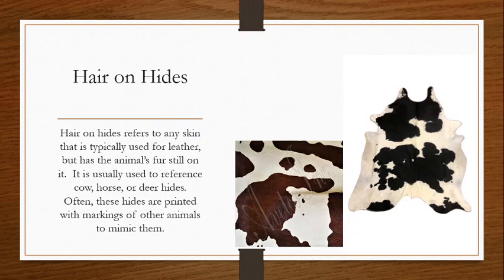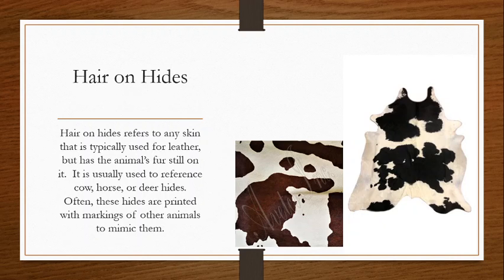Hair on hides are not a true fur — they're more closely related to leathers. Hair on hides refers to any skin typically used for leather, but with the animal's fur still on it. We typically see hair on hides made from cow, horse, or deer hides, and they're often printed with markings of other animals to mimic them.